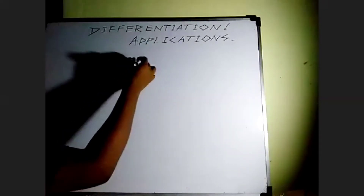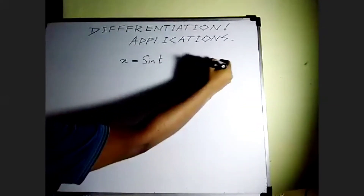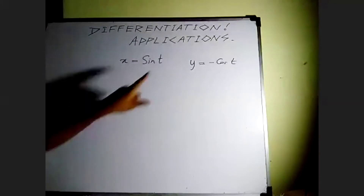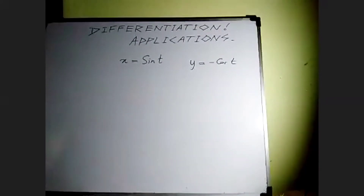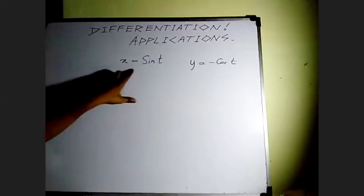The first topic is chain rule and parametric equations — I'm going to discuss both together. Let's say we have a curve where the function is given using two equations: x = sin t, y = minus cos t. The equation of a curve is given using two equations, meaning we can't write one equation for the curve — we have to use an additional variable t. That variable t is called a parameter, and expressing a function with two equations using that parameter is called parametric equations. We can differentiate these functions with respect to t.